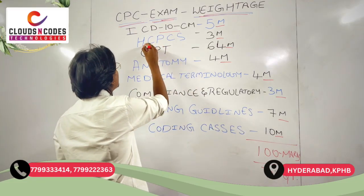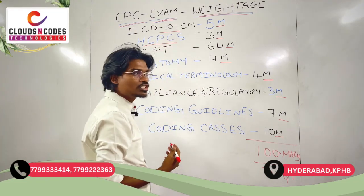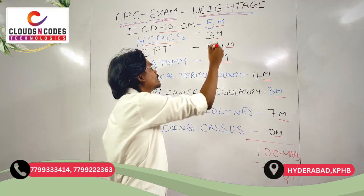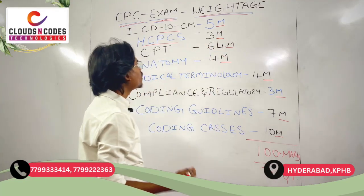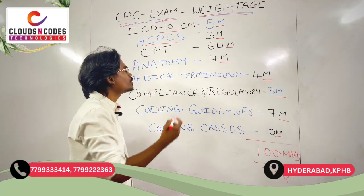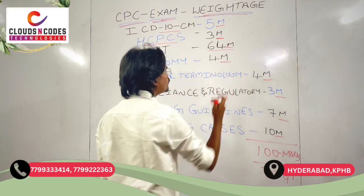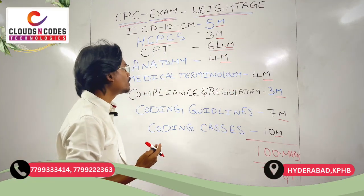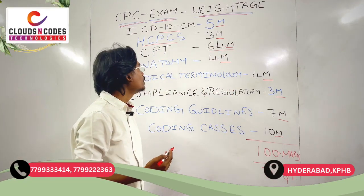From the Healthcare Common Procedural Coding System, from Material Codes, you will get 3 marks. From CPT — Current Procedural Terminology, the Procedures and Surgeries book — you will get a total of 64 marks. This is the highest weightage for the CPC exam.